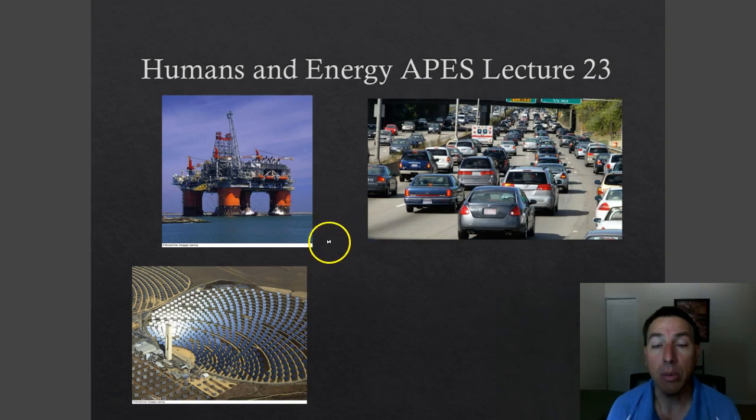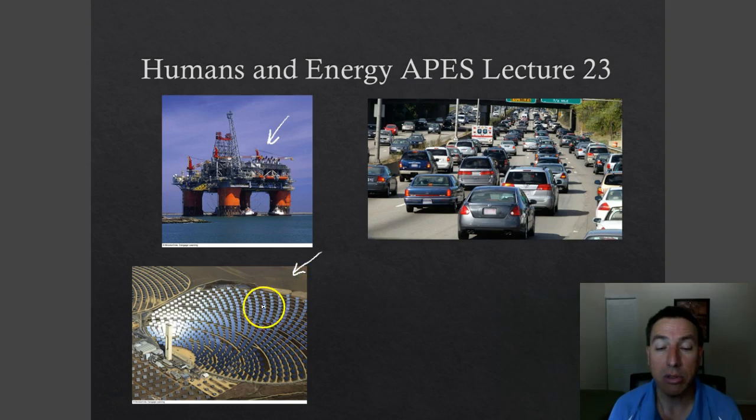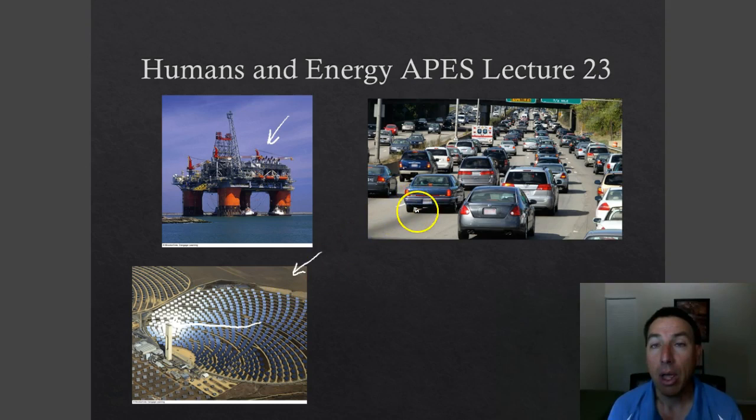Energy is the ability to perform work, so we get energy from lots of sources — obviously non-renewable in the form of fossil fuels, and then we can get it from renewable sources like solar. This is a solar farm, also called a solar power tower, because all of these mirrors direct the solar rays up to the top of this tower where they're concentrated and create a very hot area.